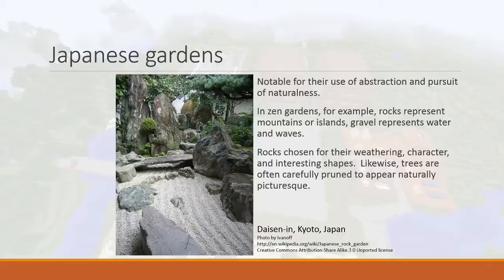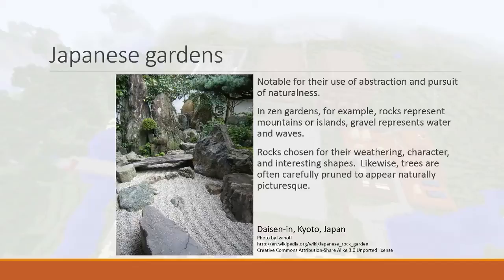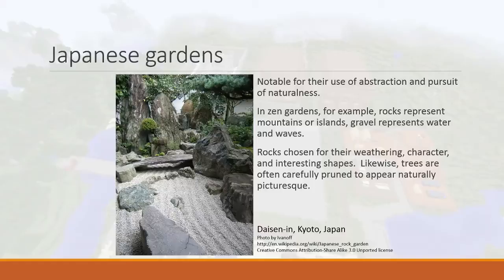The Japanese have this interest in perfection and in making things appear perfect and natural, while putting in a lot of work to achieve that appearance. One example is the bonsai tree — a miniaturized tree in a pot. There's enormous skill and time invested into making that little pot plant look like a really old, natural tree. It's miniaturized and abstracted, appearing very natural, but somebody spent a great deal of time cultivating it. This reflects their cultural values in a very interesting way.